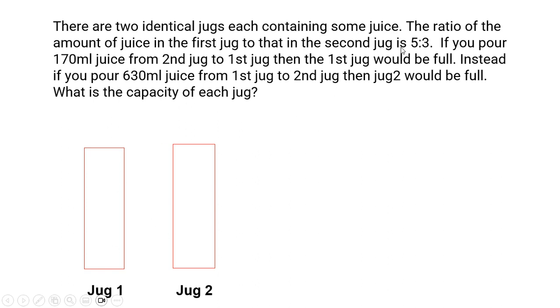Now the ratio of the amount of juice in the first jug to that in the second jug is 5 to 3. So here you have 5 units of juice. Here you have 3 units of juice. Let's fill them up. So 5 units here and 3 units here.